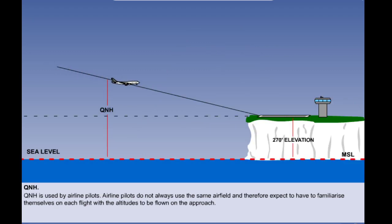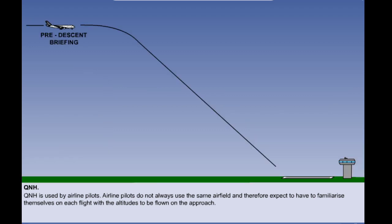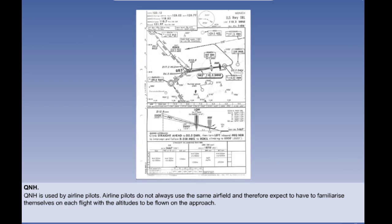QNH is used by airline pilots. Airline pilots do not always use the same airfield and therefore expect to have to familiarise themselves on each flight with the altitudes to be flown on the approach. This is normally done just before top of descent. At a quiet moment, a few minutes before the letdown is expected, the pilots hold a short intercom briefing when they look at the approach chart and agree the procedures they will use.